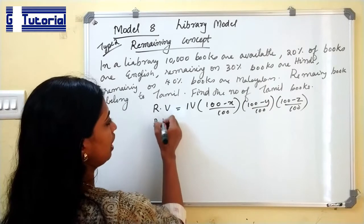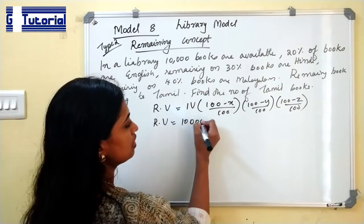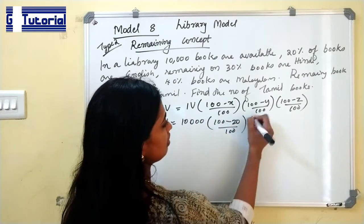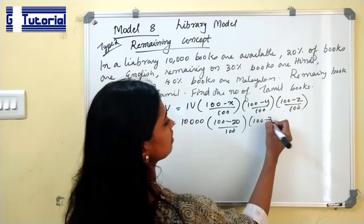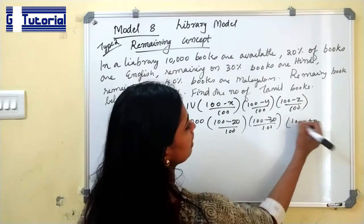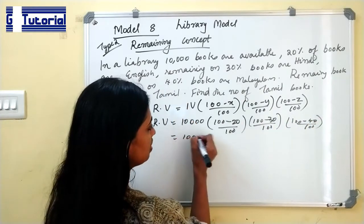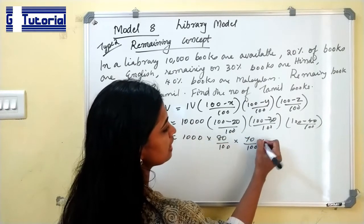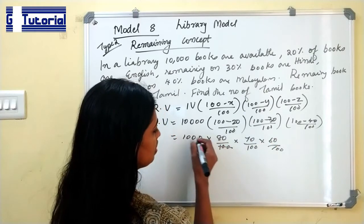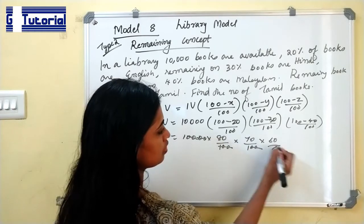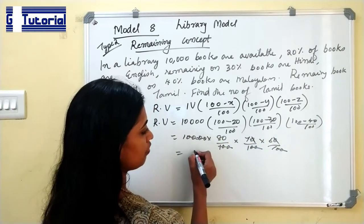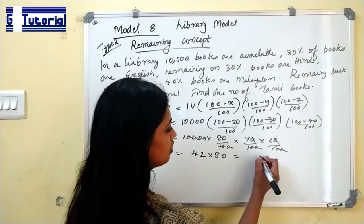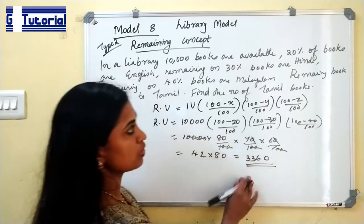So here, remaining value equals initial value 10,000, into (100 minus 20)/100, into (100 minus 30)/100, into (100 minus 40)/100. Which is 10,000 into 80/100 into 70/100 into 60/100. Simplifying this gives 3,360 books belonging to Tamil.